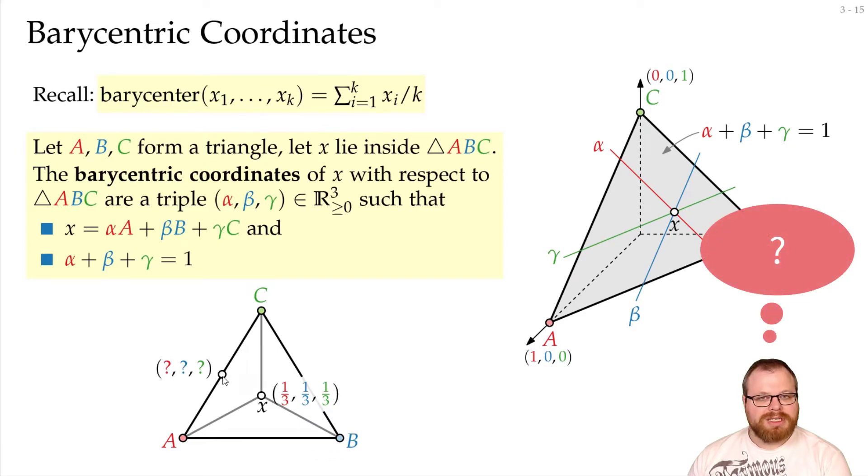And what about this point? It lies between a and c, but it doesn't go in direction b at all, so it has 1 over 2 in both these directions and 0 in this direction.